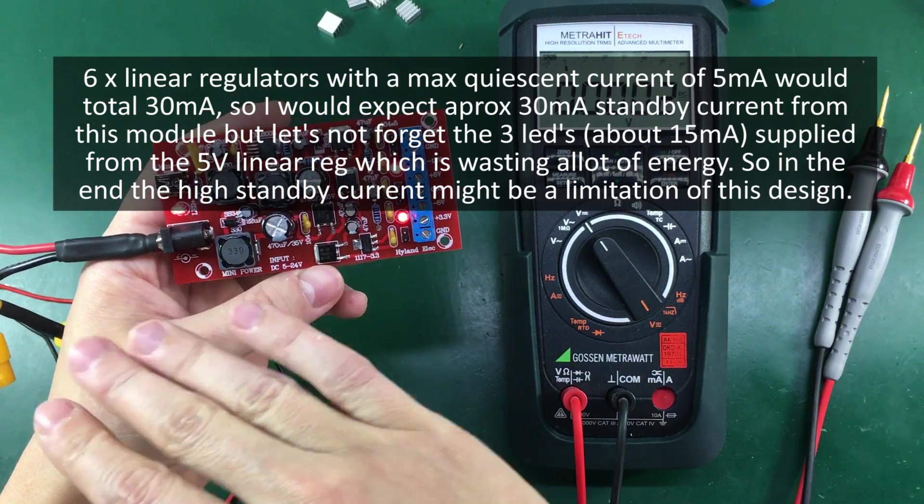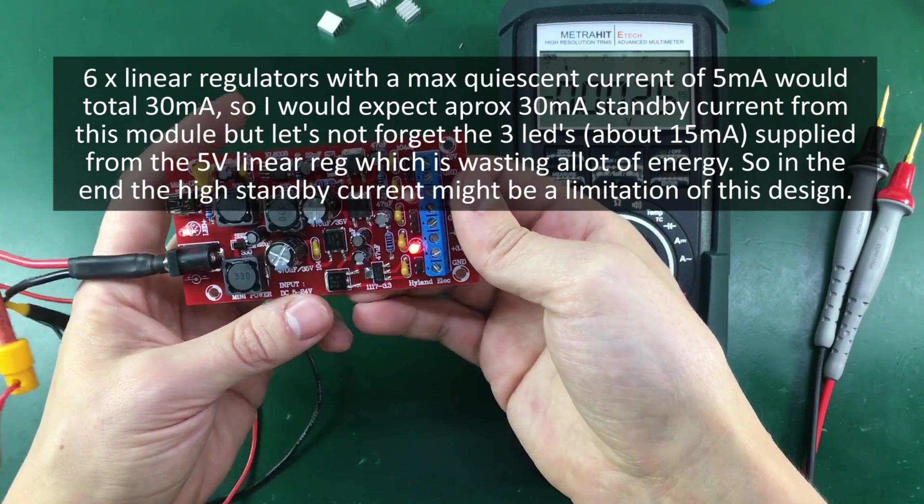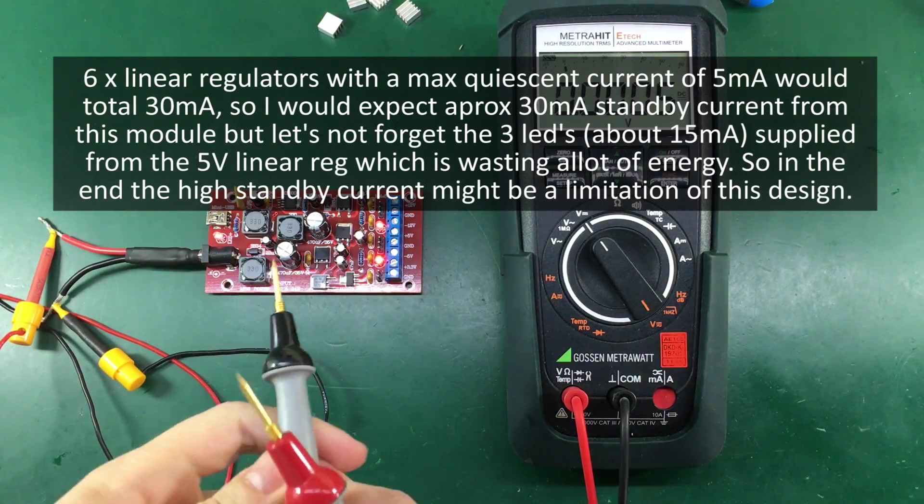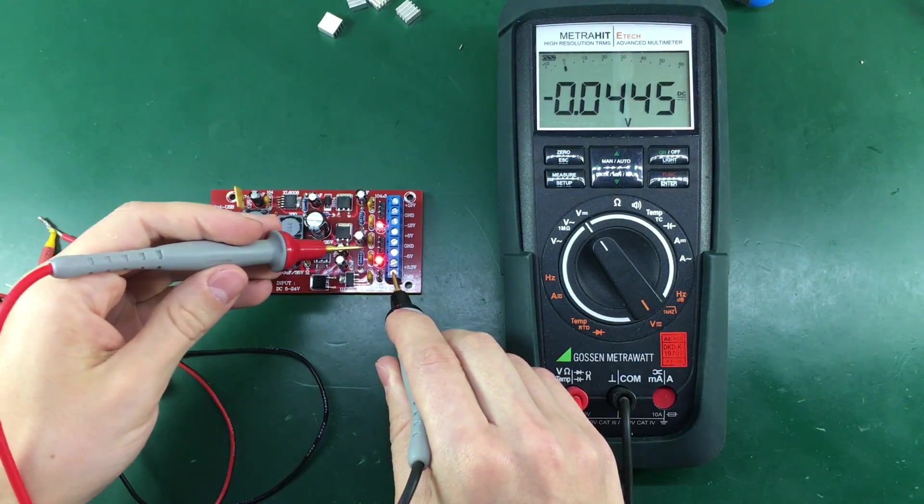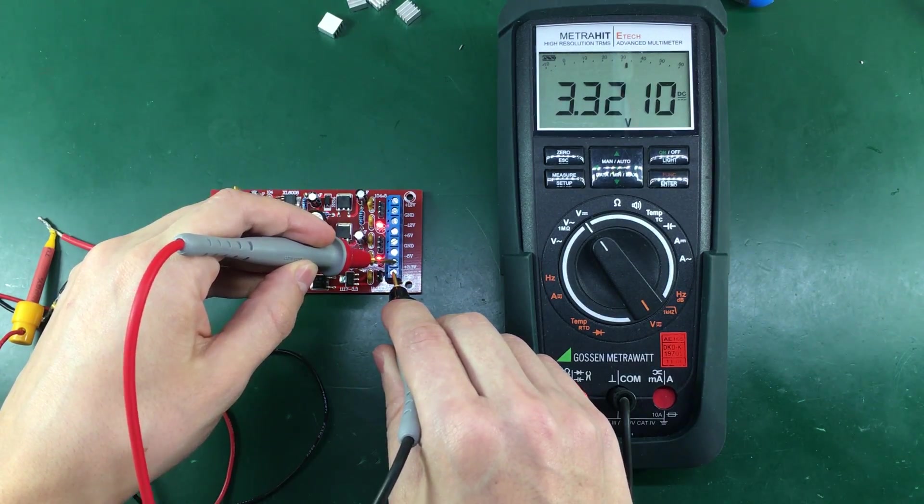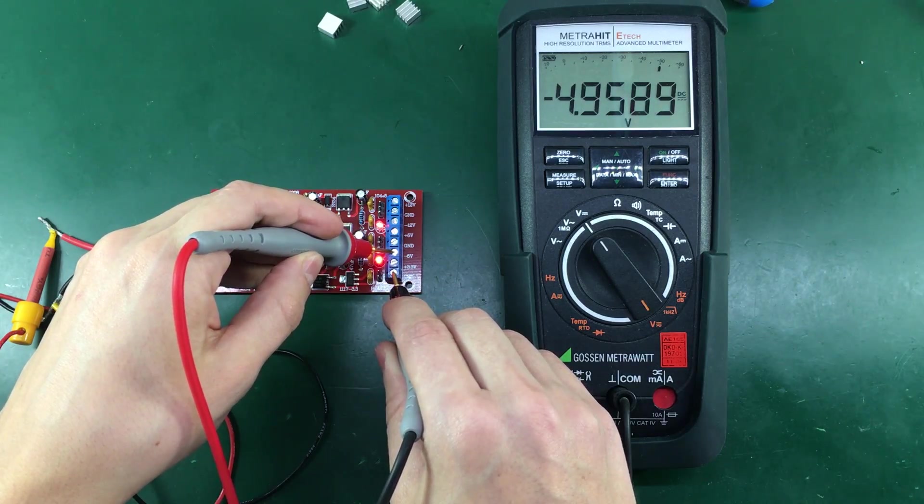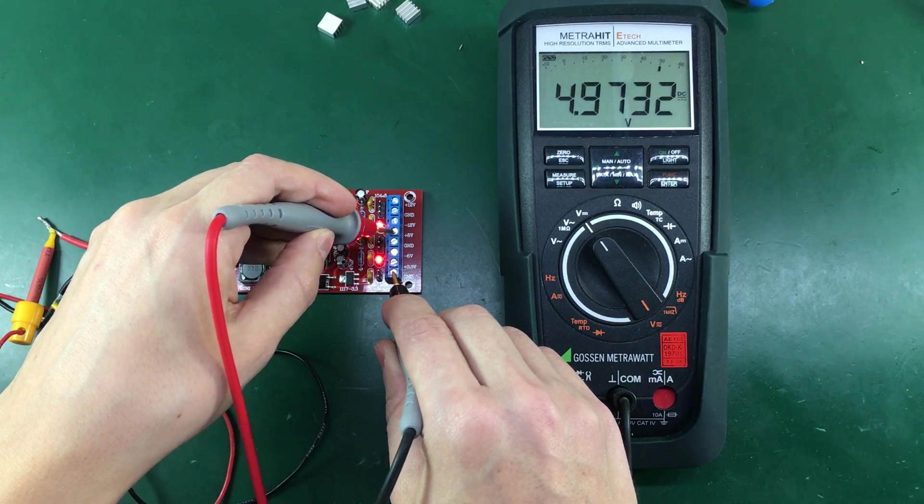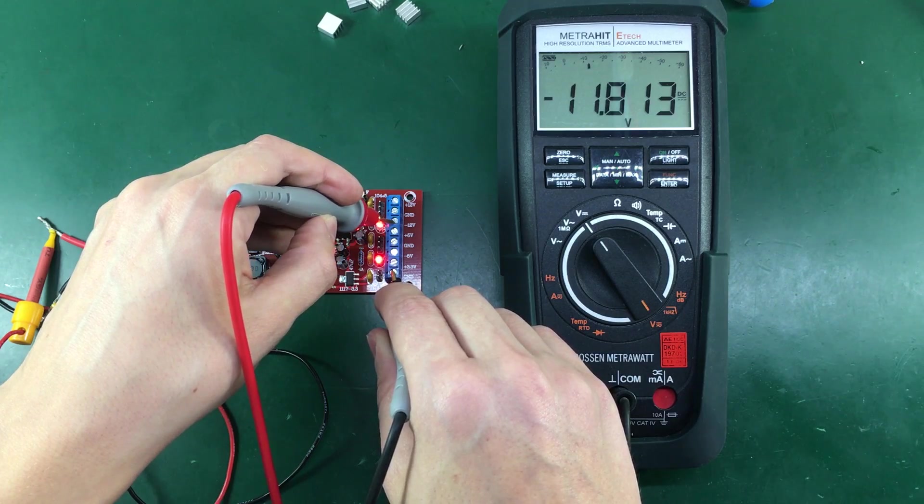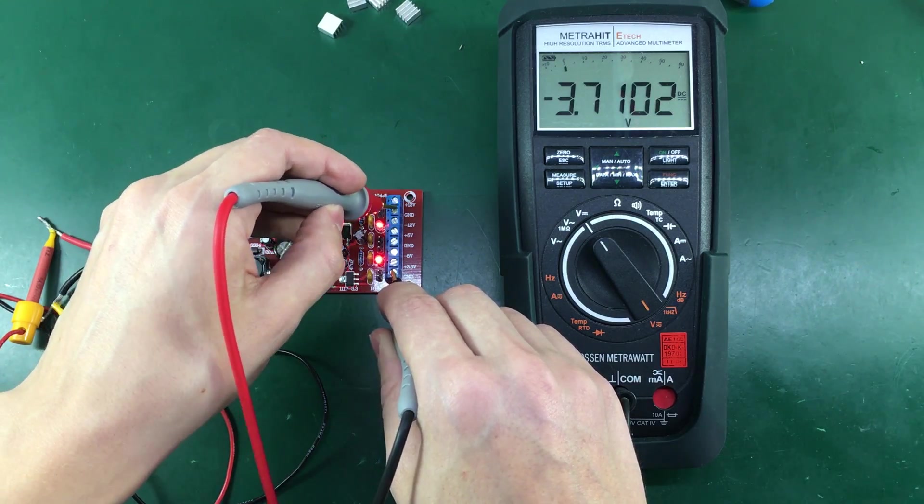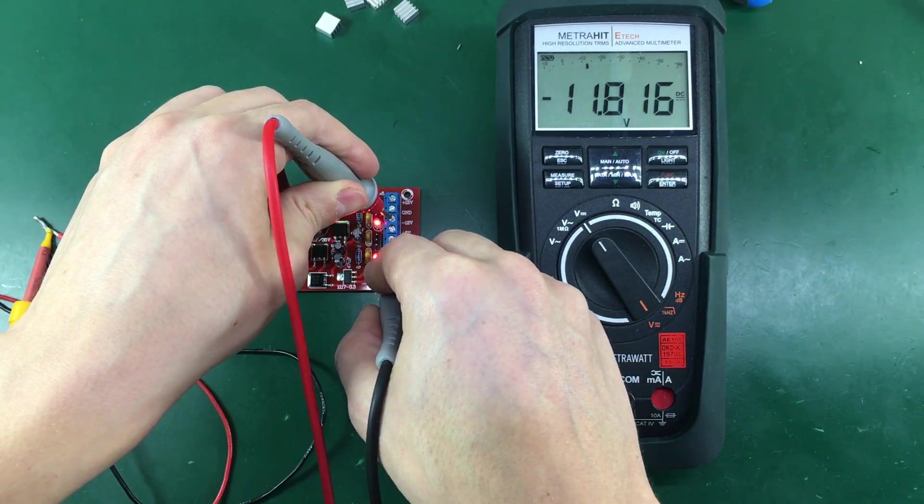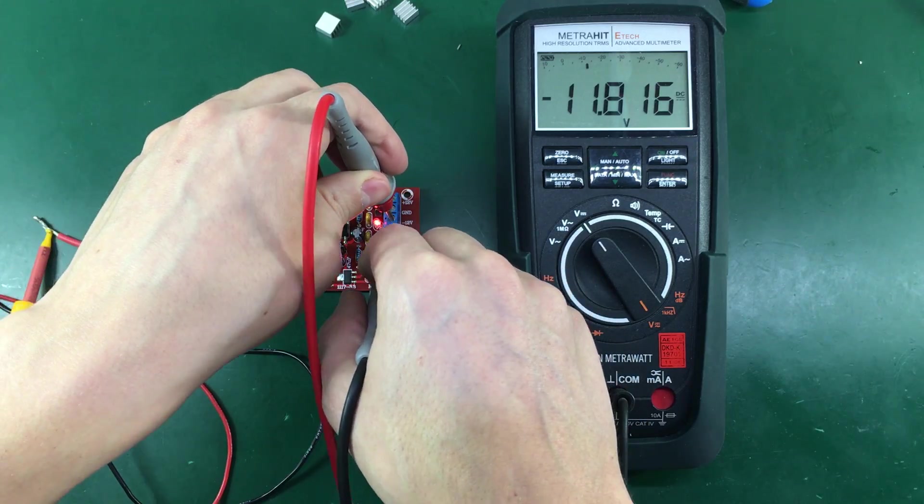So let's check the output voltages with this multimeter. So this is the plus 3.3 volts output and we have the required voltage. This is the minus 5 volts, yeah we have this one too. This is the plus 5 volts, this one works as well. And the minus 12 volts, this one is a bit low. And the plus 12 volts. So just this minus 12 volts rail is about 200 millivolts lower than it should but I guess that is within the specs of this linear regulator.